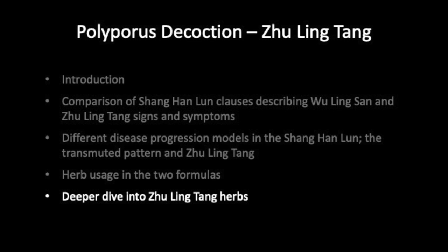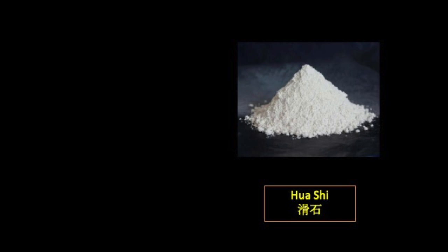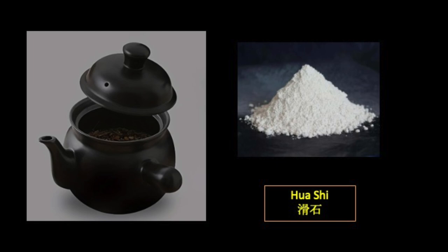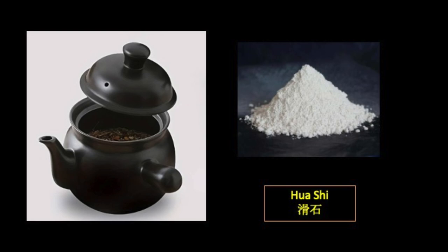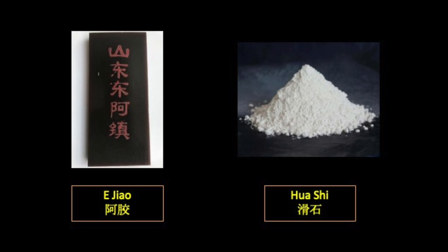Zhu Ling Tang should be viewed as a didactic formula, mainly helping us understand the Shang Han Lun. Because of the nature of E Jiao and Hua Shi, special care is required in preparation. Hua Shi is used in powder form and, as a mineral, does not dissolve; it is placed in a separate cloth bag during decoction. The Shang Han Lun instructs that all ingredients excluding E Jiao should be boiled first, reducing the volume, and then E Jiao should be entirely dissolved in the strained mixture. E Jiao must be kept separate from Hua Shi and, as a gelatin, requires considerable time to dissolve completely.